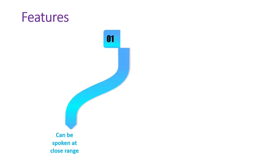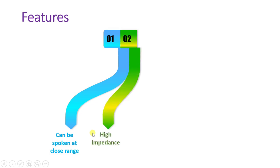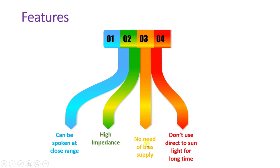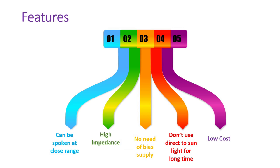Now for the features of crystal microphone: we can speak into it at close range. It has very high impedance. No external bias supply is needed. Do not expose it to direct sunlight for long periods, as this will damage the crystal's functioning. It is also a low-cost microphone. These are the features of crystal microphone.